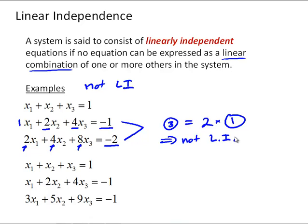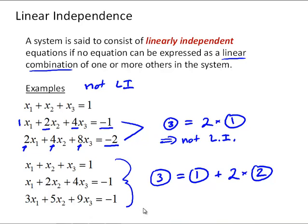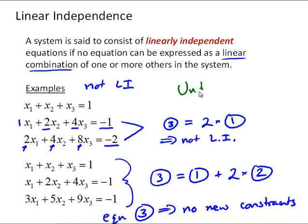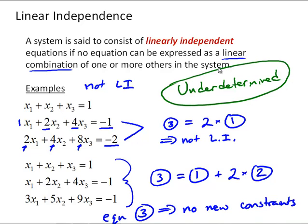Here's another example, where we can see that looking at all of these equations together, the equation three is equal to equation one plus twice times equation two. And what this means is that that third equation in both of these cases is giving us no new constraints on the system. So in all of these cases, the system is underdetermined.